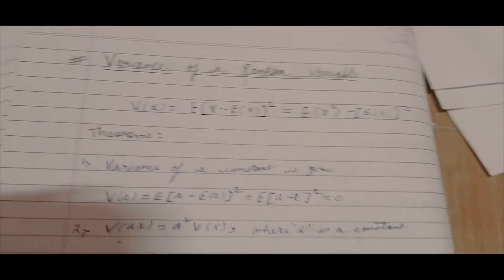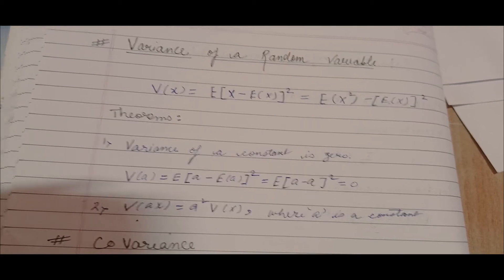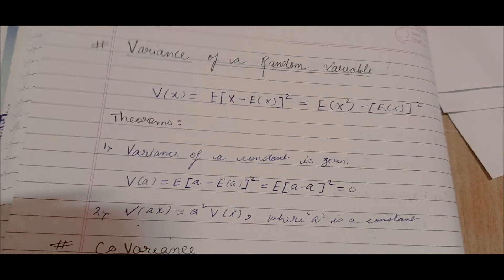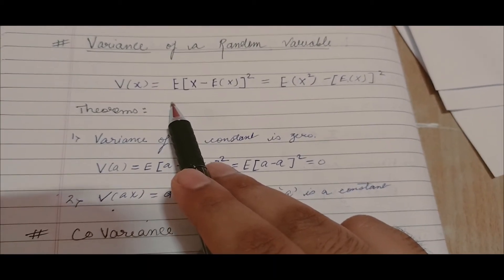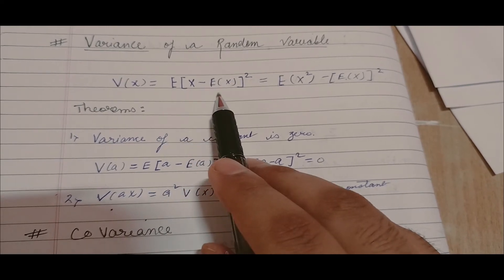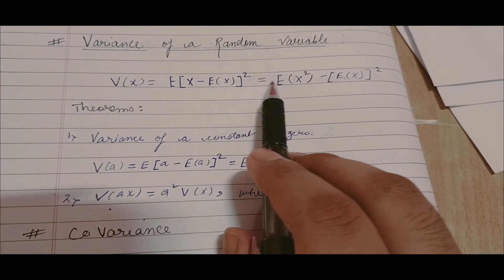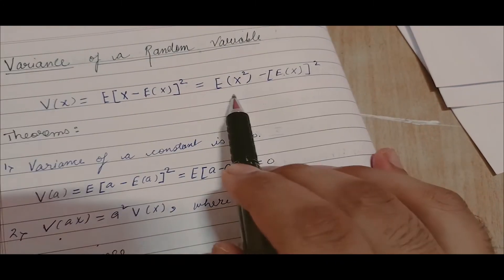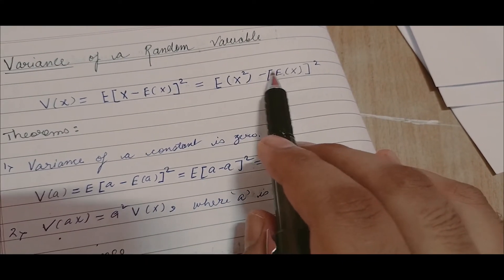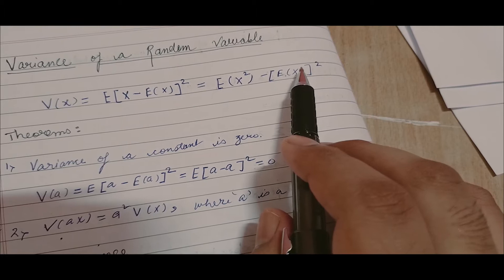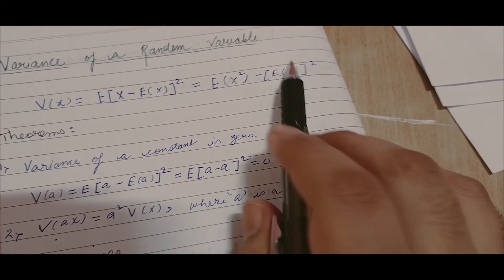The next concept is variance of a random variable. Variance is denoted by V(X). V(X) is nothing but E[(X - E(X))²], which equals E(X²) minus [E(X)]². Now let us see some theorems.